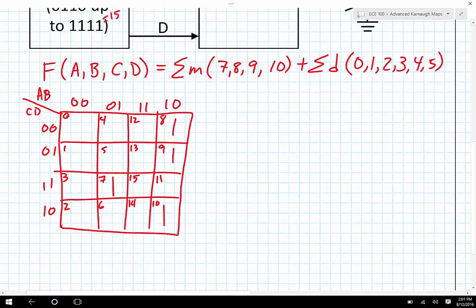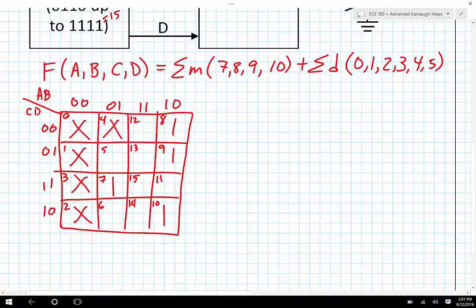0, so this 0 gets an X, 1 gets an X, 2 gets an X, 3 gets an X, 4 gets an X, and 5 gets an X. And then everything else that didn't get mentioned gets a 0.